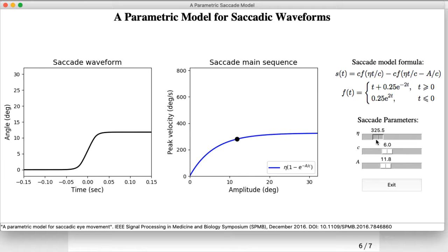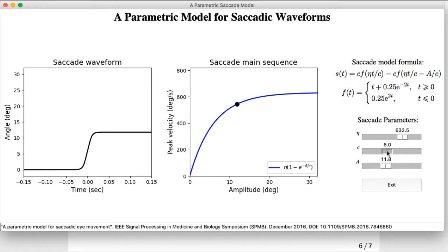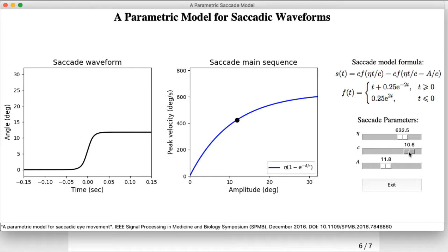Whereas if we change parameter c, we can see that the slope of the main sequence curve becomes either steeper or less steep. That also changes the peak velocity of the saccade. Notice that as we change the parameter c, the corners of the saccade waveform become more or less rounded.